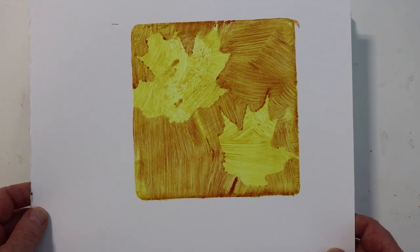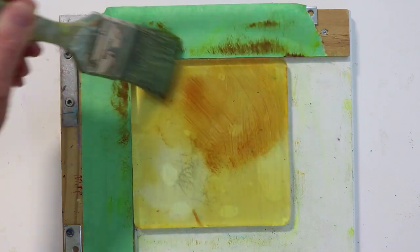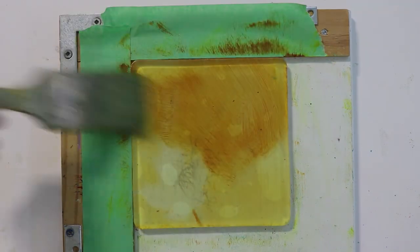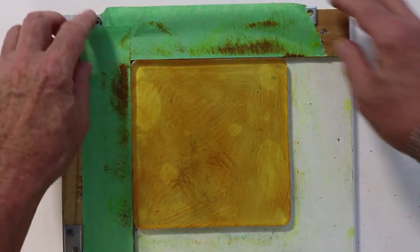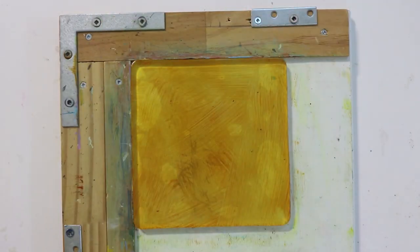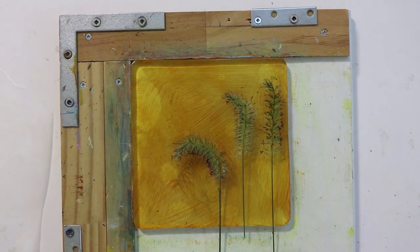You can see the maple leaves are bright yellow and I want them softer for the background. So I'm brushing on some more transparent red iron oxide and I'm going to lay down some piglet blooms. These blooms are from an ornamental grass that I have in my garden.